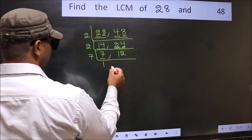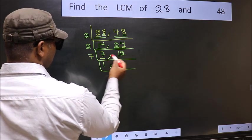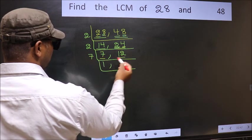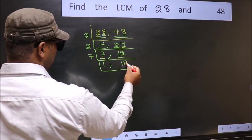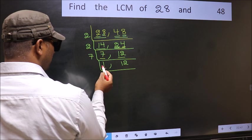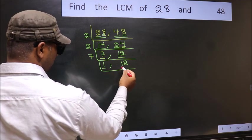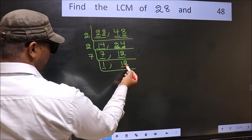7 is a prime number, so 7 once 7. The other number 12 is not divisible by 7, so we write it down as it is. Now we got 1 here, so focus on the other number 12.